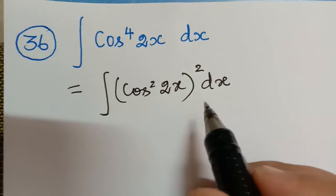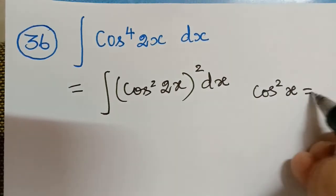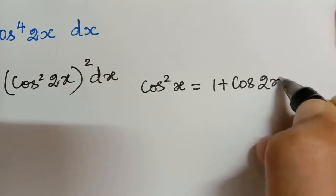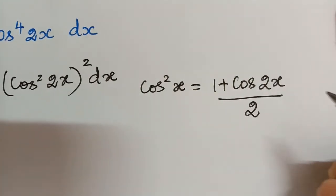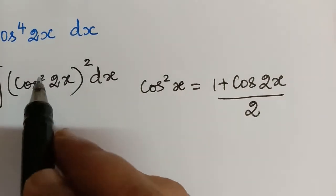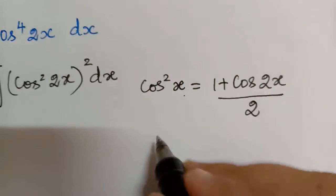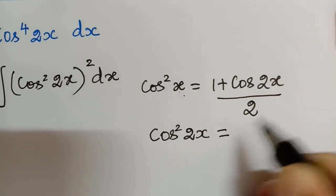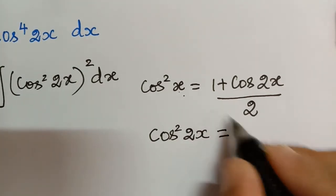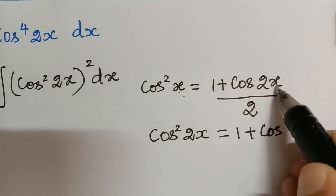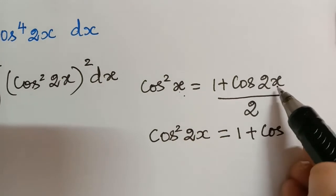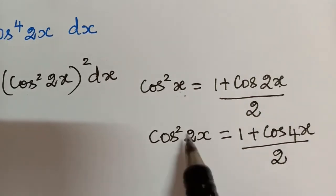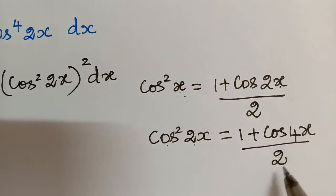We shall use the formula cos²x = (1 + cos2x) / 2. In this integral we have cos²(2x), so instead of x we have 2x. Replacing x with 2x, the 2 gets multiplied with 2 to become 4x. So cos²(2x) = (1 + cos4x) / 2.